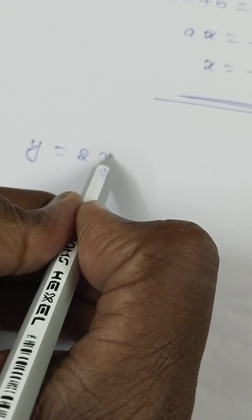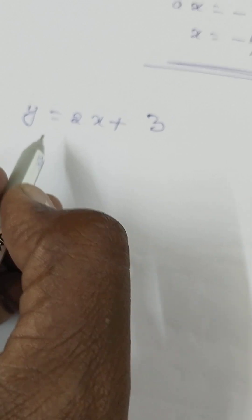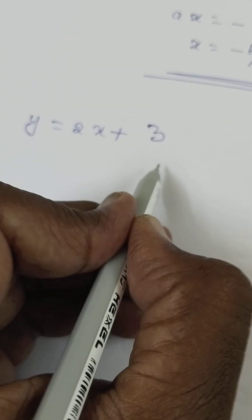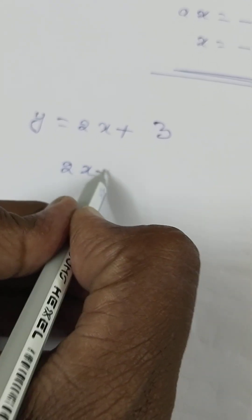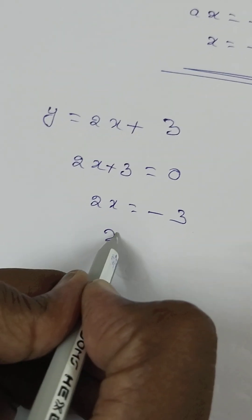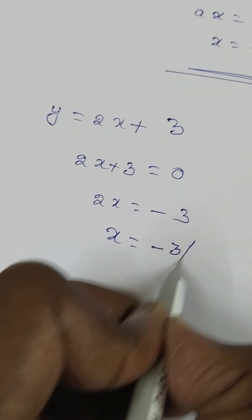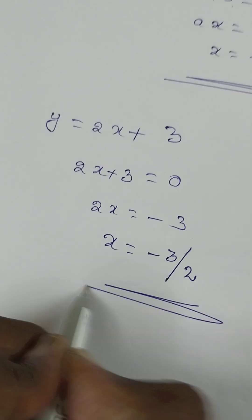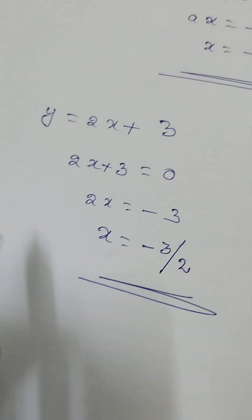Let's take an example: y is equal to 2x plus 3. To find the zero of the polynomial, we set 2x plus 3 is equal to 0, so 2x is equal to minus 3, and x is equal to minus 3 by 2. This is the zero of the polynomial.